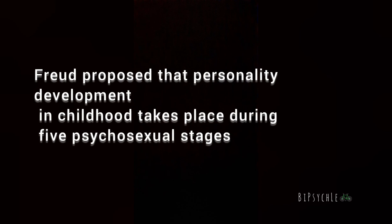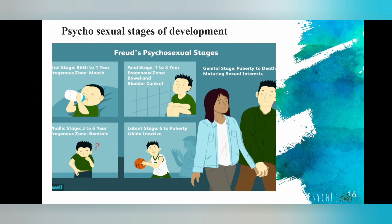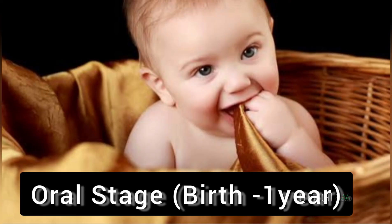Let's talk about the psychosexual stages of development. According to Freud, our personality is developed through psychosexual stages: the oral stage, anal stage, phallic stage, latency stage, and genital stage. Freud says that development involves libido — sexual energy — which concentrates on different parts of the body at each stage. The first stage is the oral stage.